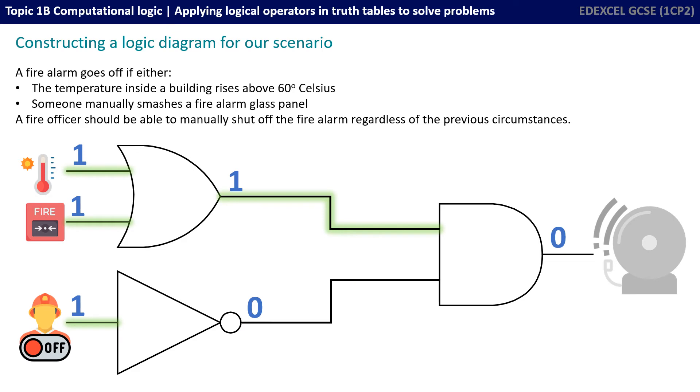And the final line of our scenario is that the fire officer has come along and has manually shut off the fire alarm. He's providing an input of a 1 to the NOT gate, he's activated the manual override.